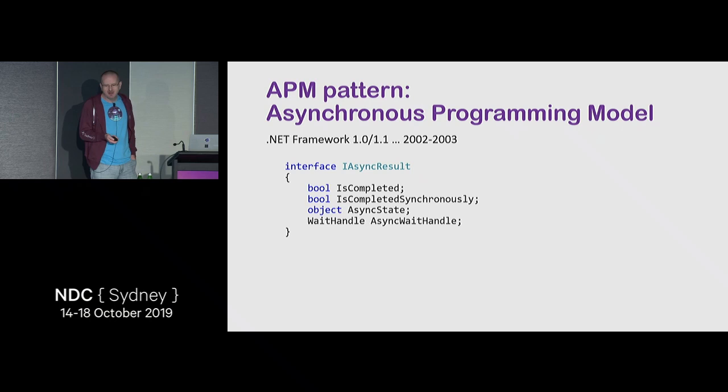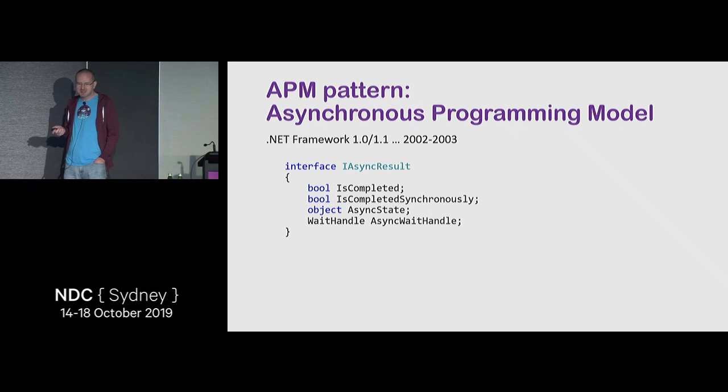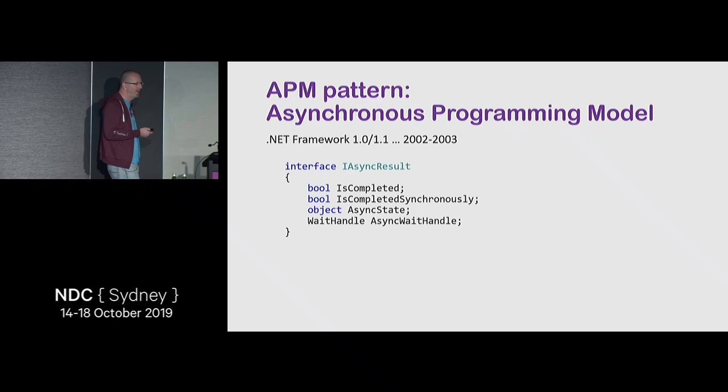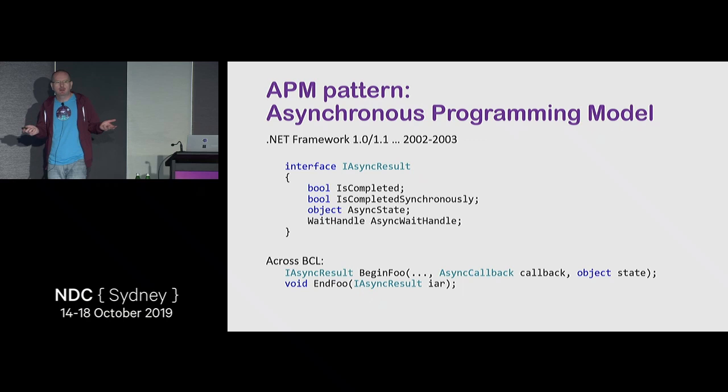APM had an IAsyncResult interface with a few things on it: IsCompleted, IsCompletedSynchronously as booleans, some object AsyncState that was usually custom, and an AsyncWaitHandle — typically a ManualResetEvent or AutoResetEvent. This was spread across the BCL at the core level and was cool back then.